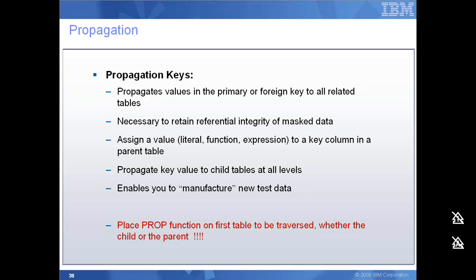Propagation, as already discussed, is a method wherein we ensure that referential integrity is maintained across all related primary and child tables. If I modify a specific value in the primary table, using the propagate function we ensure that the related child tables across all various levels also have the same masked value, which ensures that referential integrity is not broken at any level and maintains a one-to-one mapping with the production database RI constraints. The propagate function should be placed on the column of the first table that is traversed — the starting table from where the data privacy begins.